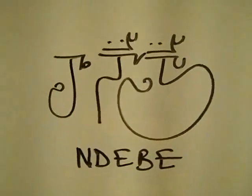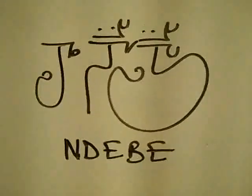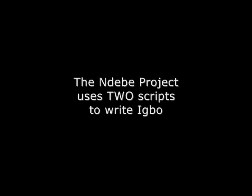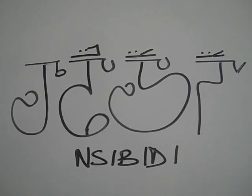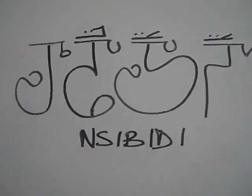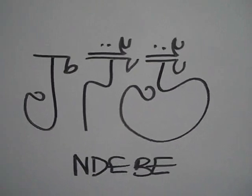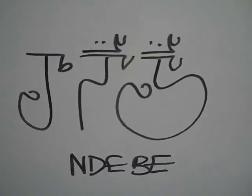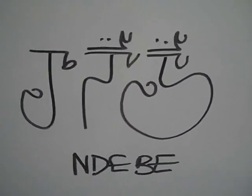The first scripting assignment is to write the basic forms. The first is called Nsibidi. The second, NDABA. This video will focus only on scripting for NDABA.